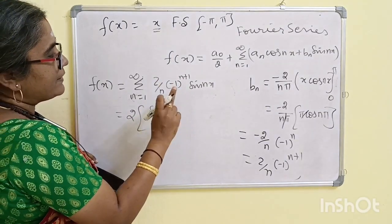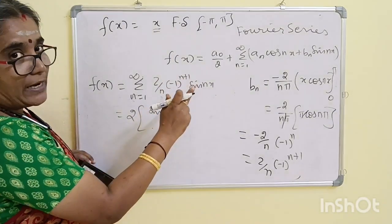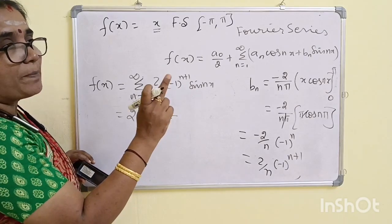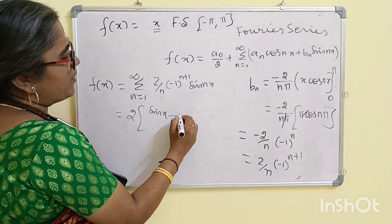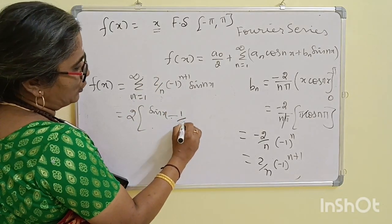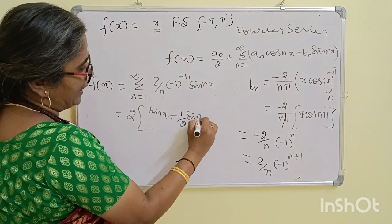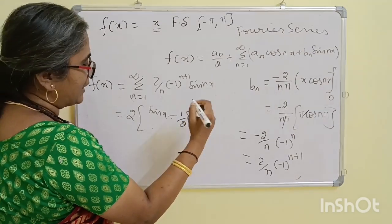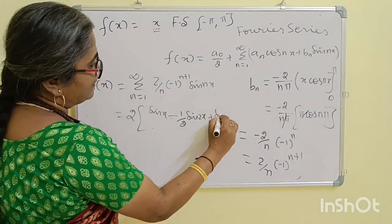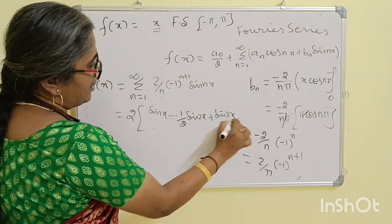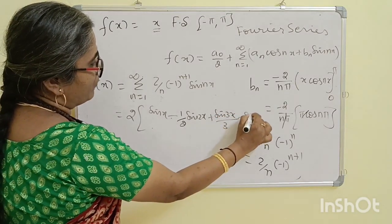For n = 2: (-1)^3 = -1, so we get -(1/2)·sin(2x). For 3x: (-1)^3 = -1, so minus (1/3)·sin(3x). (-1)^4 gives +1, and so on.